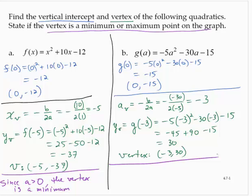Our a-coefficient is negative 5, so that's less than 0. The parabola opens down. So the vertex is a maximum.